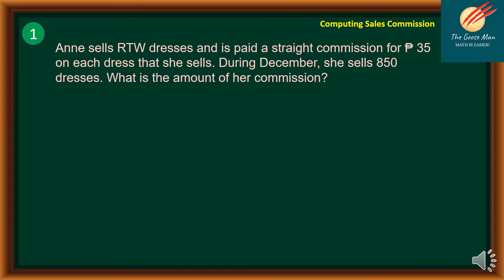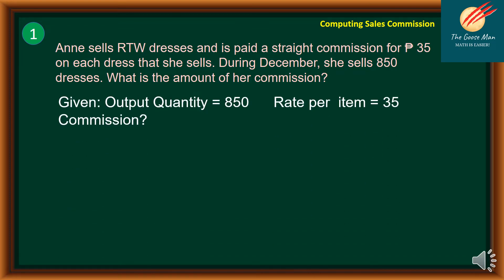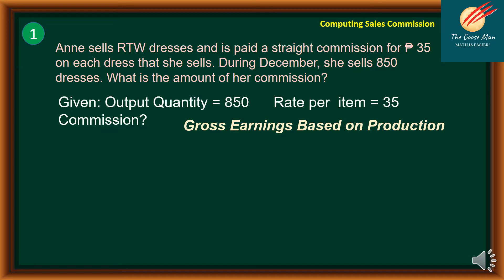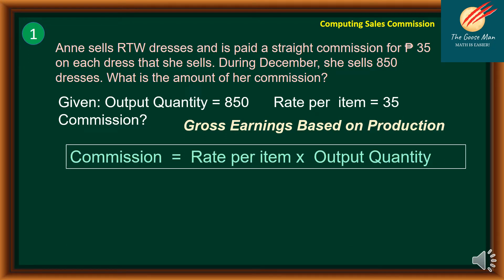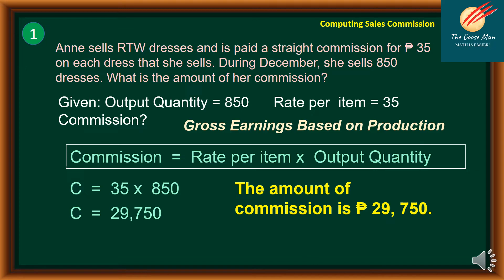Problem 1: On sells RTW dresses and is paid a straight commission of 35 pesos on each dress she sells. During December, she sells 850 dresses. The given are: output quantity = 850 and rate per item = 35 pesos. Gross earning = rate per item × output quantity = 35 × 850 = 29,750. Therefore, the amount of commission is 29,750 pesos.